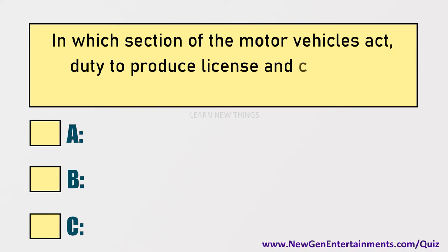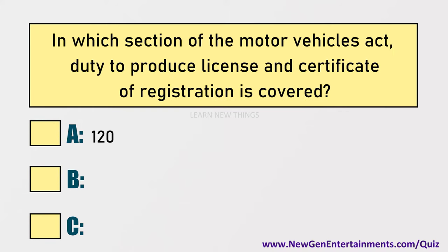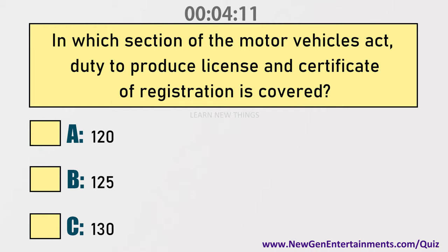In which section of the Motor Vehicles Act is the duty to produce license and certificate of registration covered? Options are: A) 120, B) 125, C) 130. Answer: Option C, 130.